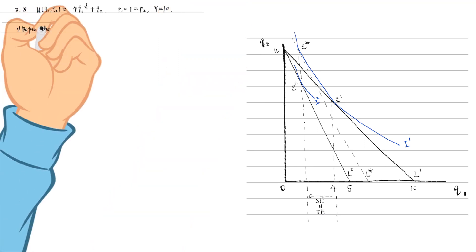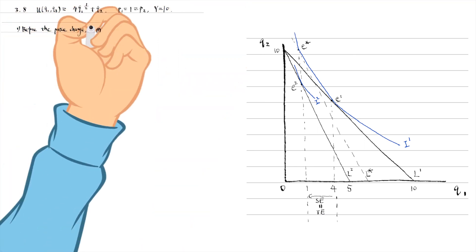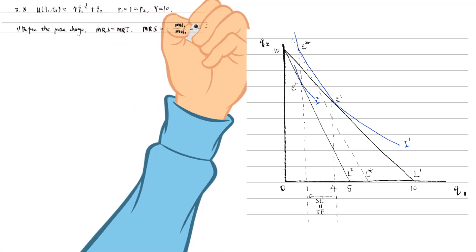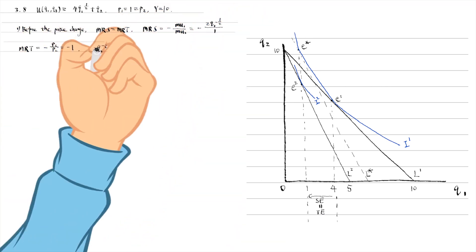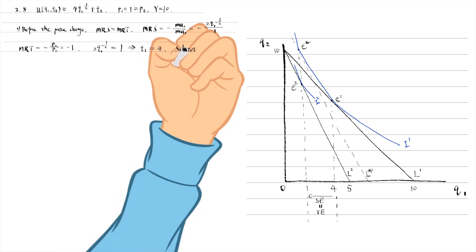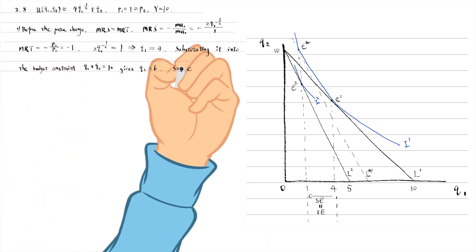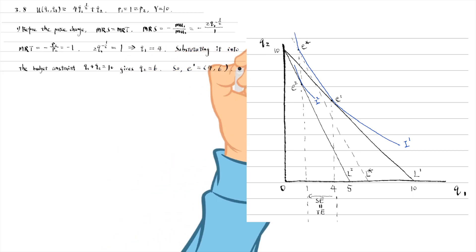In the first step, we figure out the bundle before the price change. We use the tangency condition. The marginal rate of substitution always equals the marginal rate of transformation at the point where the indifference curve is tangent to the budget line. The former equals the marginal utility ratio and the latter equals the price ratio. We obtain the optimal quantity of Q1, which equals 4. Substituting it into the budget constraint gives the optimal quantity of Q2, which equals 6. So we have the Q1 and Q2 coordinates of the optimal bundle E1 before the price change.